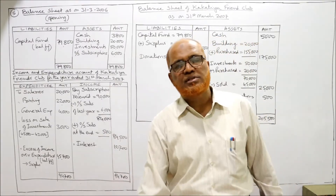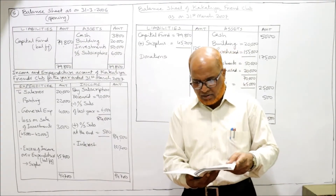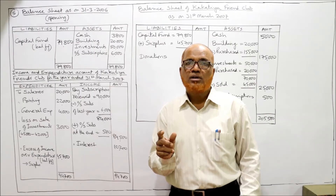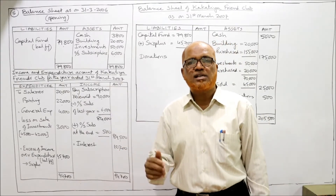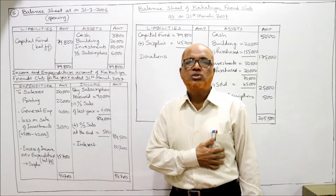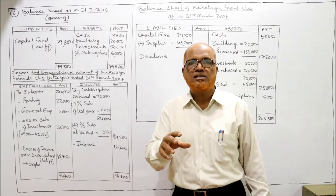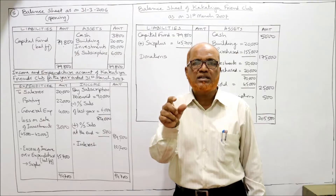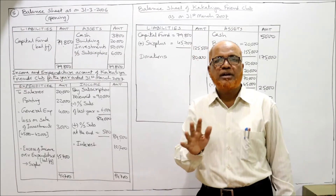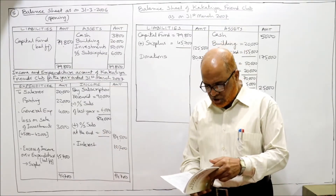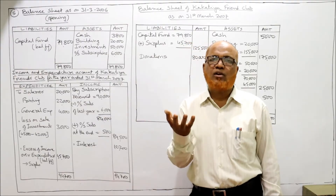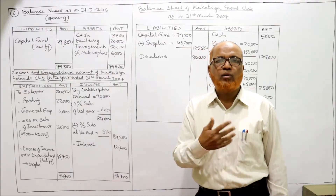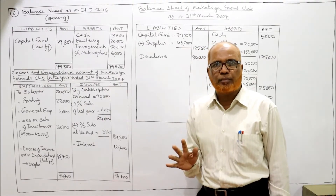There are two income items: subscription 84,500 and interest 10,200. Donations of 80,000 are given — though a general donation, the amount is huge compared to subscription income of 84,500. We can therefore capitalize it. In an examination, write a note: the donation is a general donation but the amount is significant, so we treat it as capitalized and take it to the balance sheet, not as recurring income. Sale of investment 42,000 is a capital receipt and also goes to the balance sheet.